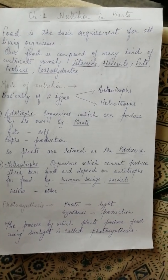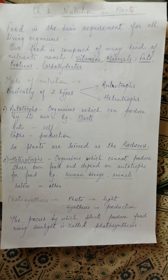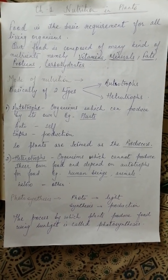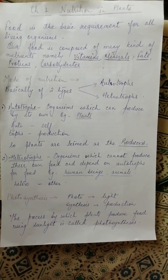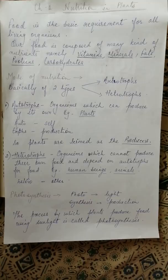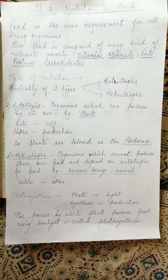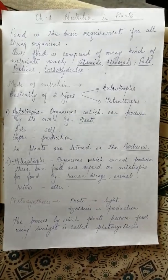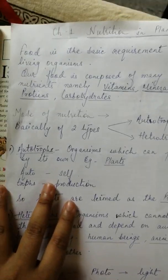Good morning students, today we will begin with our very first chapter — nutrition in plants. The basic requirement for all living organisms, including plants and animals, is food. Our food is composed of various nutrients, which you have already learned in class 6. These nutrients are namely vitamins, minerals, fats, proteins, and carbohydrates.